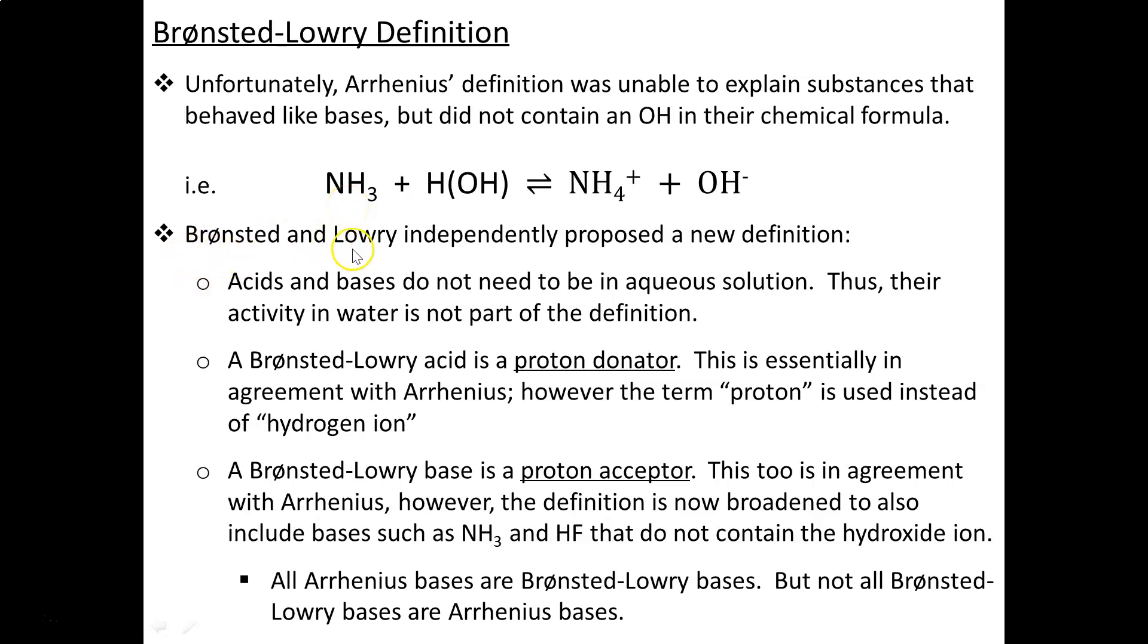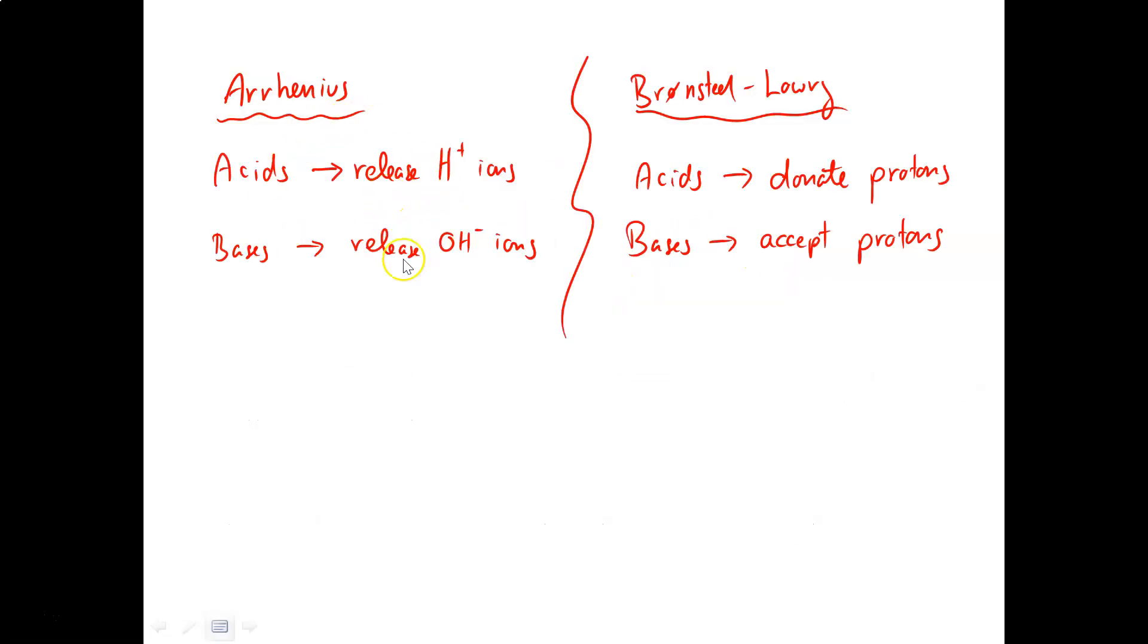Enter Bronsted and Lowry who independently proposed a new definition of acids and bases. Whereas the Arrhenius definition was built around what each substance could release, H+ ions or OH- ions, the Bronsted-Lowry definition was built around how they behaved around each other. So acids donate protons while bases accept protons. If you remember, protons are essentially H+ ions. So both the Arrhenius definition of acids and the Bronsted-Lowry definition of acids match up. An Arrhenius acid is a Bronsted-Lowry acid and vice versa. In that respect, they do agree.